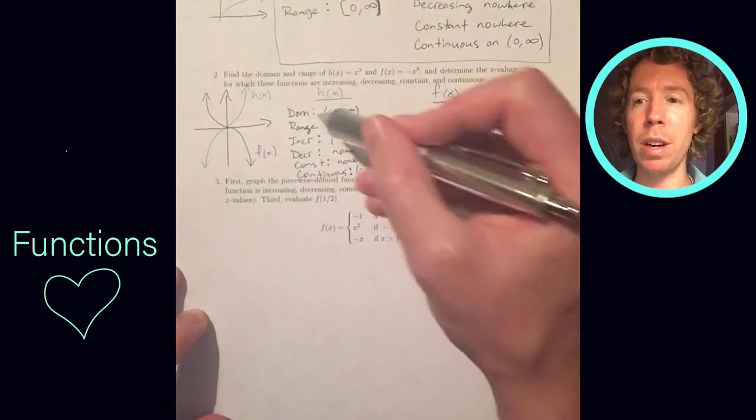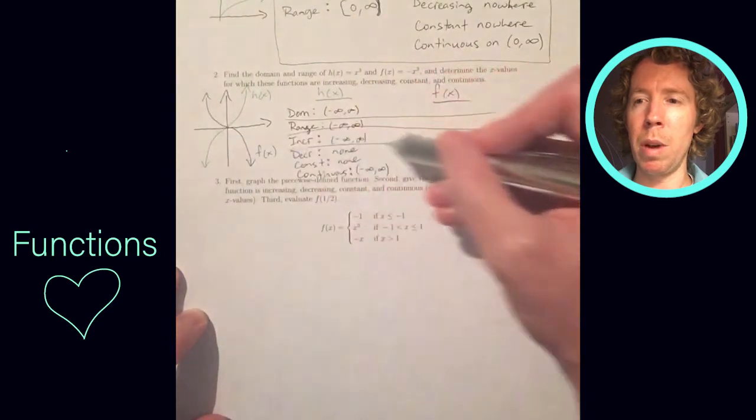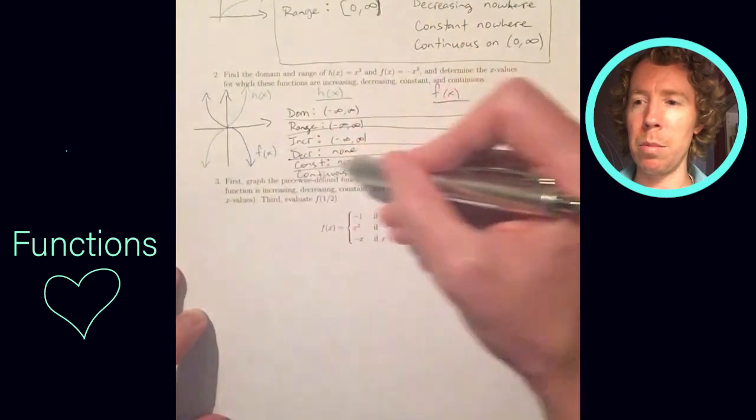Same thing for f of x. It's a very simple function. The domain and range are the same as they were for h. Here's where it starts to get messy.